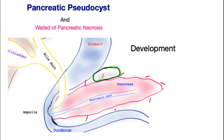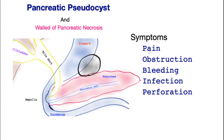A walled-off pancreatic necrosis is a pseudocyst with dead pancreas within its walls. These are related but different entities. Now let's look into the symptoms.